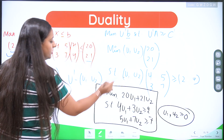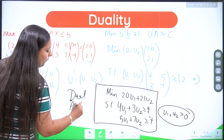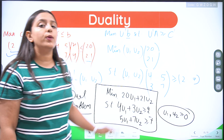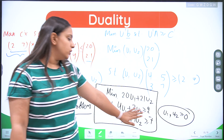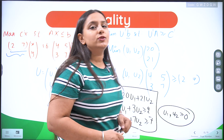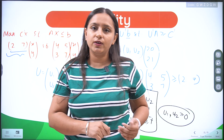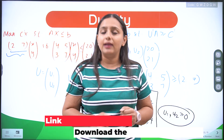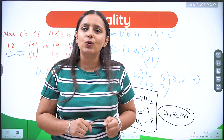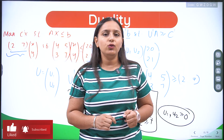So what is written in black here is my dual problem of the given primal problem. See how easily we have converted our primal into the dual — this was the solution to the duality question in the video. I hope you liked this video and found it useful. Please like it, share it with your friends, subscribe to the channel, and let us know the other topics on which you want videos. Thank you everyone for watching.